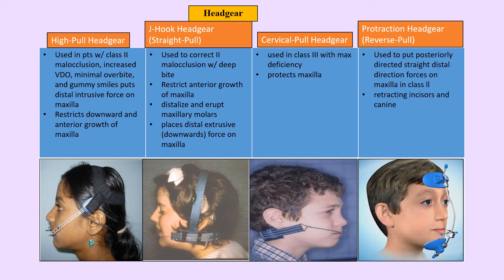Headgears are orthopedic appliances. Types include high-pull headgear (used for Class 2 with open bite), straight-pull J-hook (Class 2 with deep bite), and cervical-pull headgear (applies distal forces on the maxilla, retracts canines and incisors). All headgears modify maxillary growth by restraining it to allow the mandible to catch up, and help reinforce anchorage. The reverse-pull headgear (facemask) is the only headgear used for Class 3, as it can protract the maxilla.